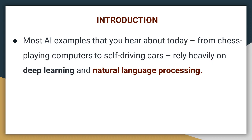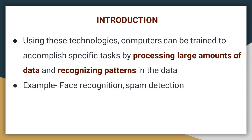Artificial intelligence is a very famous field today and has found many applications. Most AI examples that you hear about today — from chess-playing computers to self-driving cars — rely heavily on deep learning and natural language processing. Both deep learning and natural language processing are special fields within artificial intelligence. Using these technologies, computers can be trained to accomplish specific tasks by processing large amounts of data and recognizing patterns in the data.